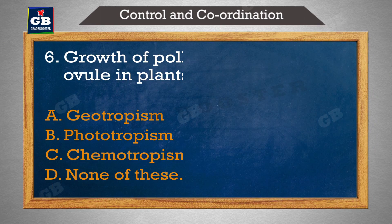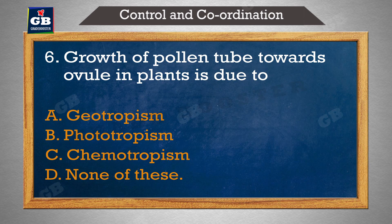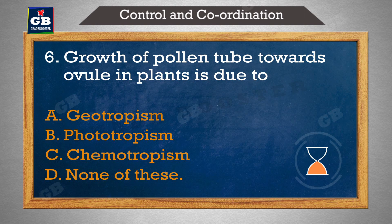Growth of pollen tube towards ovule in plants is due to — plants mein ovule ki aur pollen tube ki growth aur movement ke karan hai: a) geotropism, b) phototropism, c) chemotropism, d) none of these.